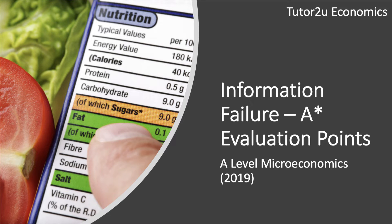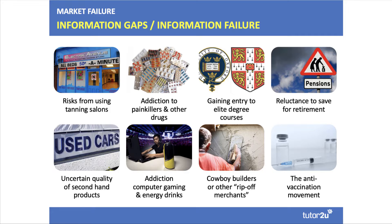Welcome to a revision video on microeconomics covering information failure. It's important to have good examples of potential information failure in markets. This is a favorite topic for examiners because information failure affects the choices that people make, and those choices then impact on outcomes in different markets, which have consequences for economic welfare and social welfare — particularly when you link information failure to externalities.